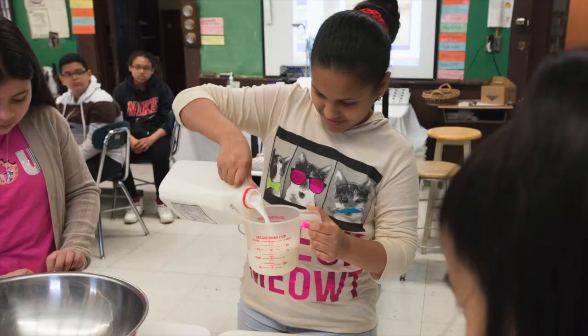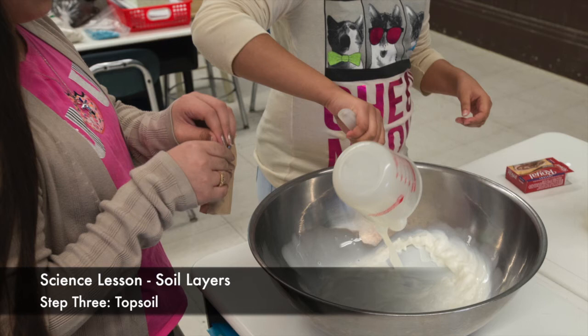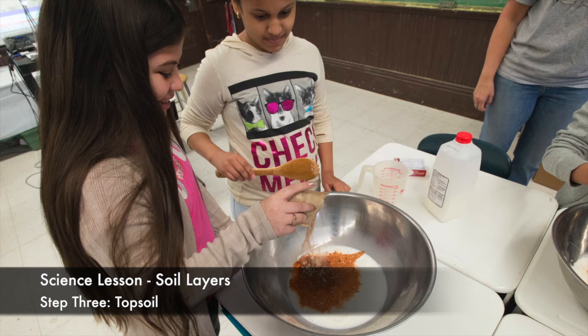When we are making the pudding, it represents the topsoil. The topsoil provides nutrients in the soil to the plants. We are combining the atoms from the pudding mix with the atoms of the milk, and together they form a new substance.